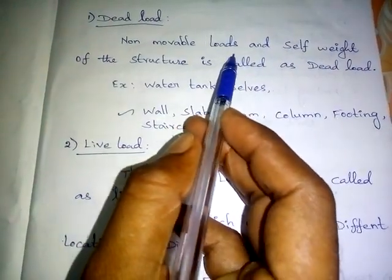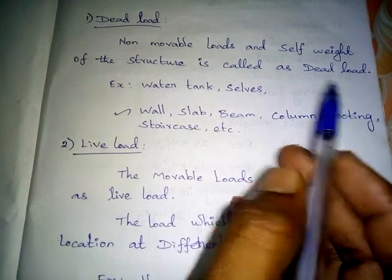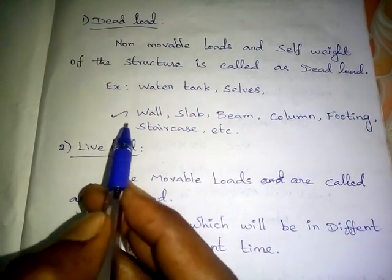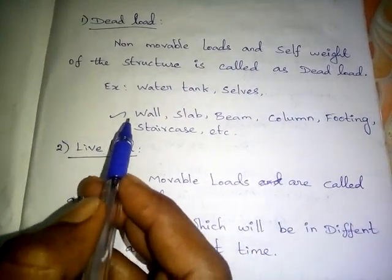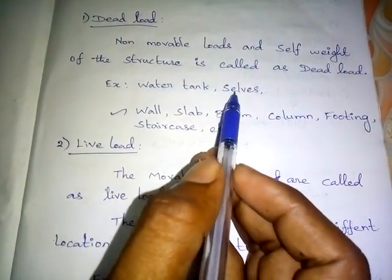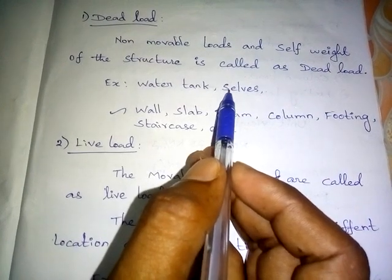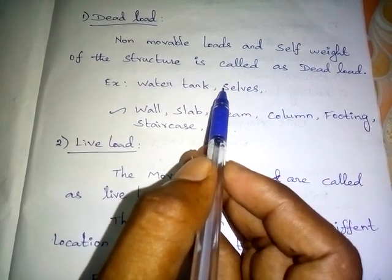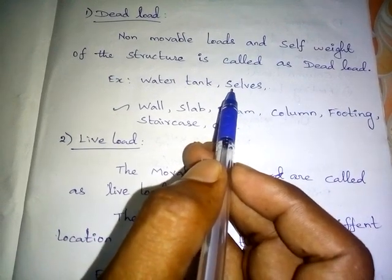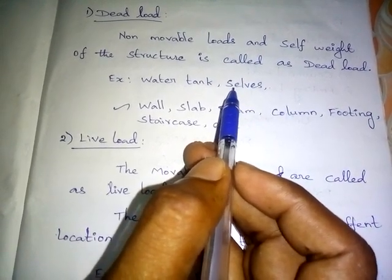The square footing thickness is 2.5 meters. First, load types: dead load and live load. The self-weight of the structure is called dead load. The water tank is self-weight. The dead load is also called self-weight. We have to construct the brick machinery — it is a load. It is a live load.